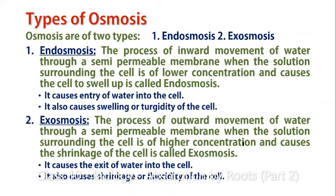There are two types of osmosis: endosmosis and exosmosis. Endosmosis means the inward movement of water — water entering the cell. When a cell is surrounded by a low concentrated solution, there is more water outside and less water molecules inside the cell, so water from outside enters. This causes entry of water into the cell, resulting in swelling and turgidity of the cell.